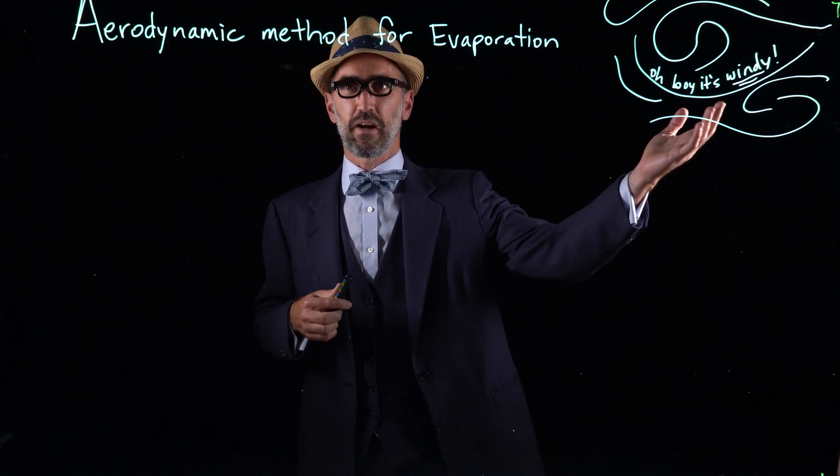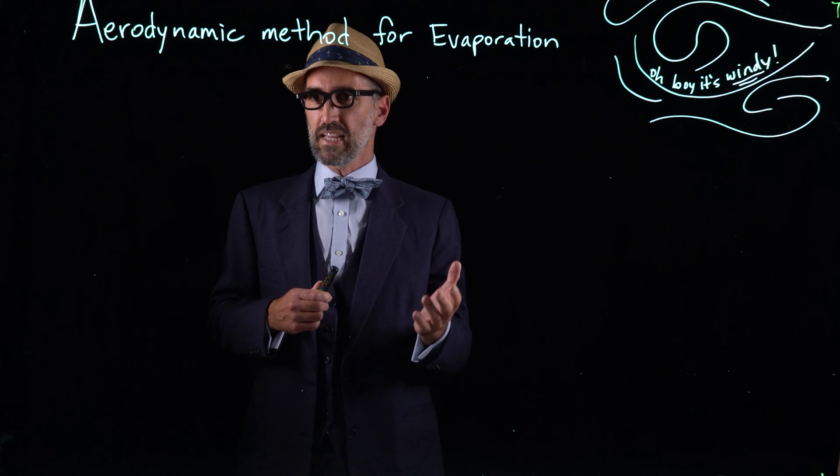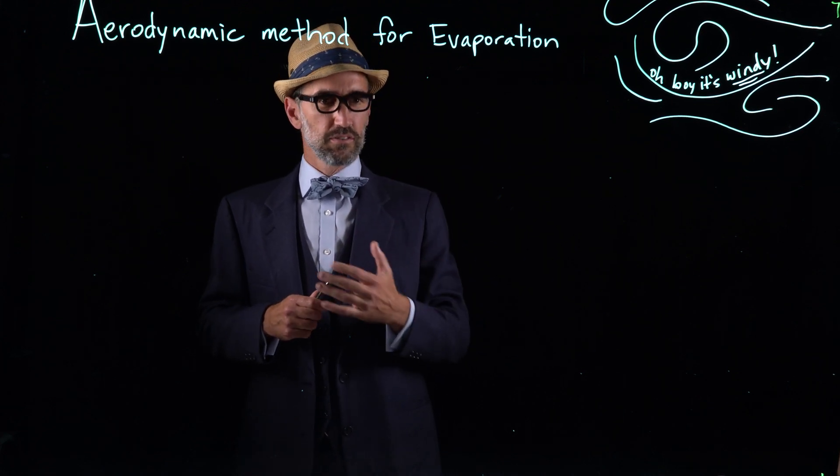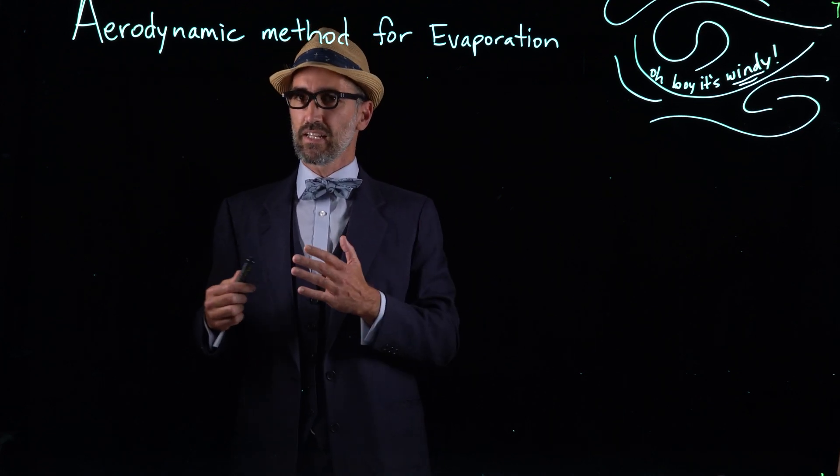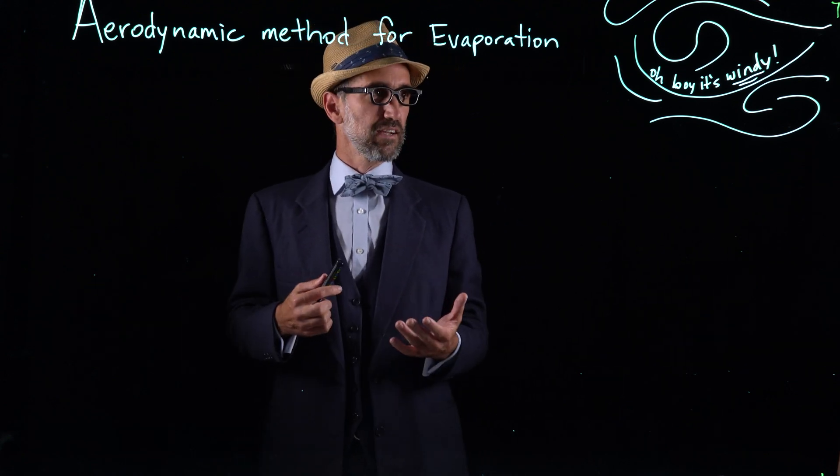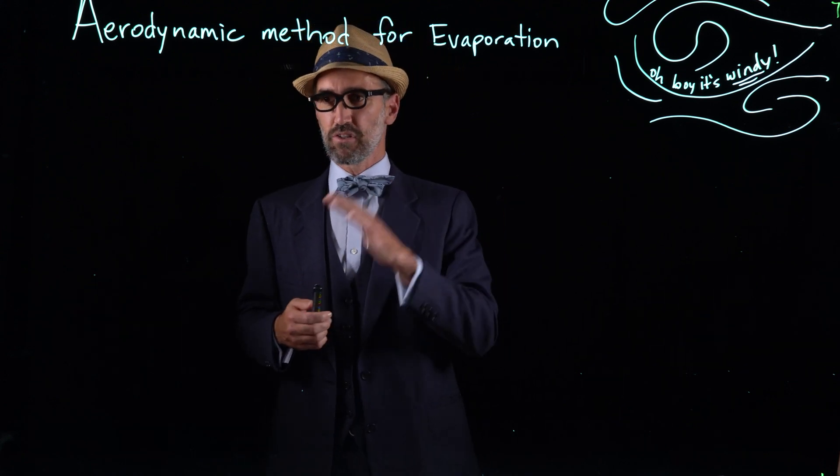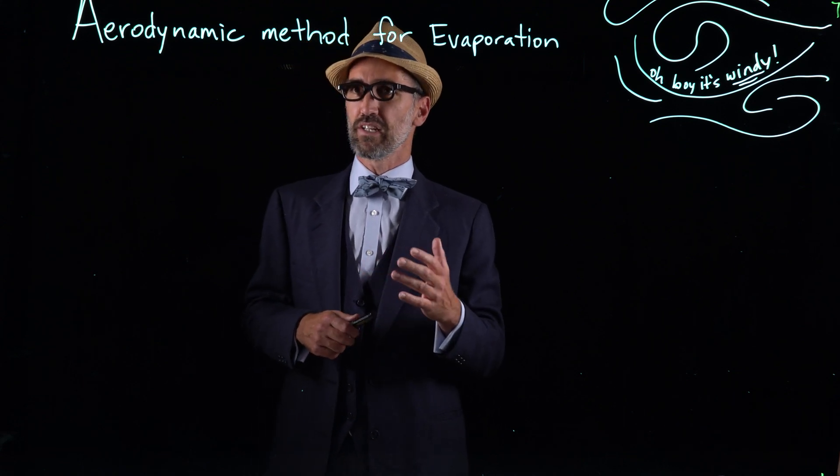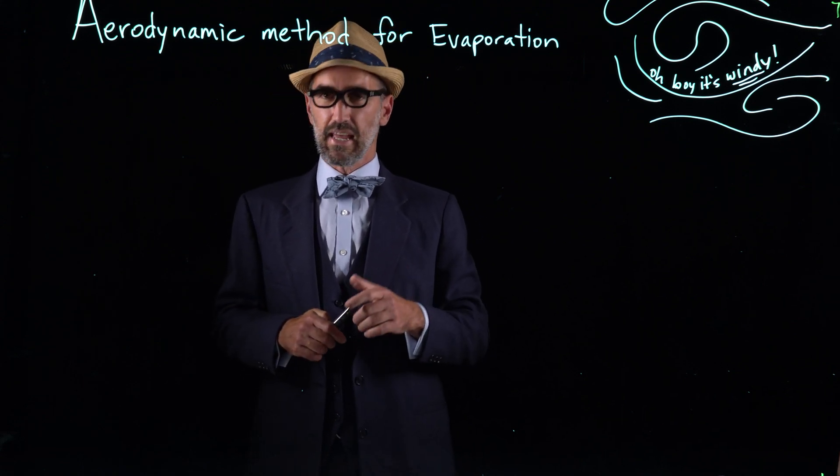So I have up in the right hand side here, oh boy it's windy. We're going to use the same values in the same place of Phoenix. We're going to calculate the evaporation over this proposed reservoir in Phoenix due to the wind instead of due to the sun, which is what we did in the last video about the energy balance method.